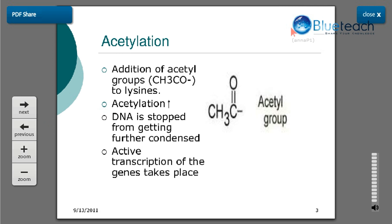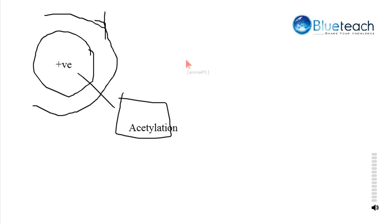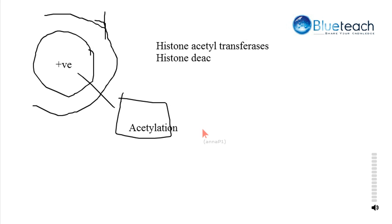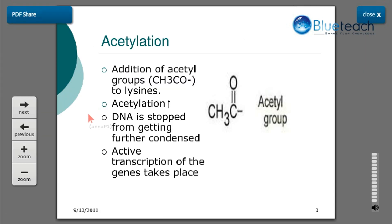A certain set of enzymes known as histone acetyltransferases promote the acetylation and hence transcriptional activation. The opposite is done by histone deacetylases, which deacetylate the histone proteins, and as a result transcriptional activation is inhibited. So when there is increased acetylation, active transcription of genes takes place.